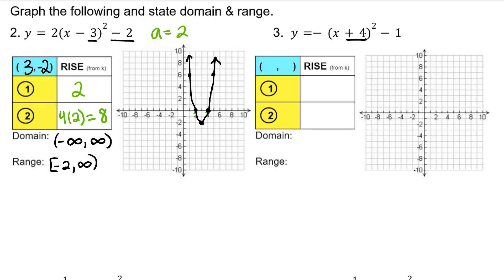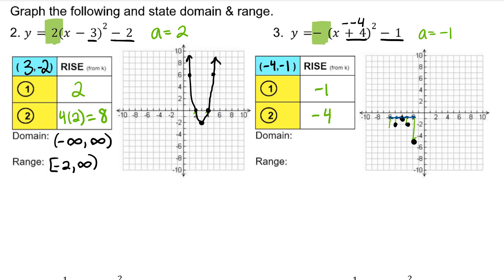For number 3, h is negative 4 and k is negative 1. Identify a to determine your rise — a is equal to negative 1 — so the rise 1 unit away from the vertex will be -1, and 2 units away will be 4a, or negative 4. Graph your vertex, then graph the four remaining points using a. One unit to the left or right, go down 1. Two units to the right, go down 4, and two units to the left, go down 4.